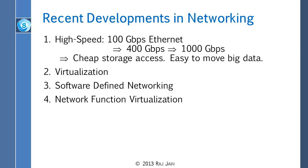Before going to code-data co-location, let me tell you what recently happened in networking. First, speeds went up — we have 100 gigabit right now and 400 and 1,000 gigabit are being discussed in IEEE. So even if data is not local and you have to move it, that is possible today. Second is virtualization, which will be covered in the next four slides. And then there is software-defined networking and network function virtualization, which will be taught in more detail in the next part of this course.